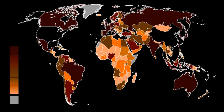GDP can be determined in three ways, all of which should, in principle, give the same result. They are the production approach, the income approach, or the expenditure approach. The most direct of the three is the production approach, which sums the outputs of every class of enterprise to arrive at the total.